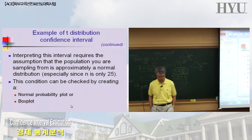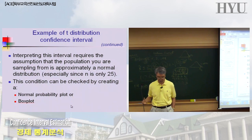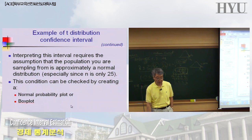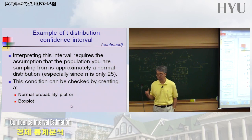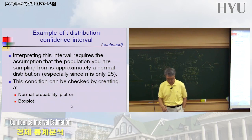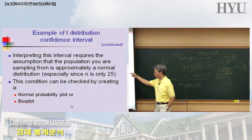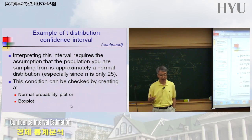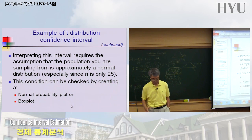One word of caution: this entire formula requires the assumption that the population is normally distributed. You can check this using a normal probability plot or box plot. If you can't check it, rely on the Central Limit Theorem and ensure you have a sufficiently large sample. In the example with n=25, we cannot apply CLT, so we must be careful in applying the formula and making the interpretation.